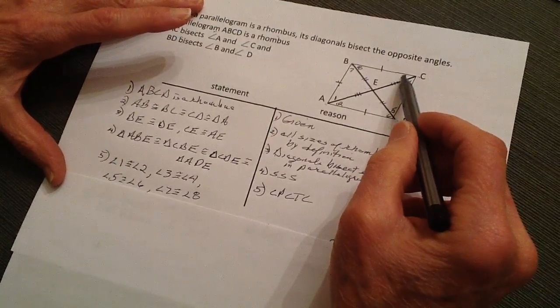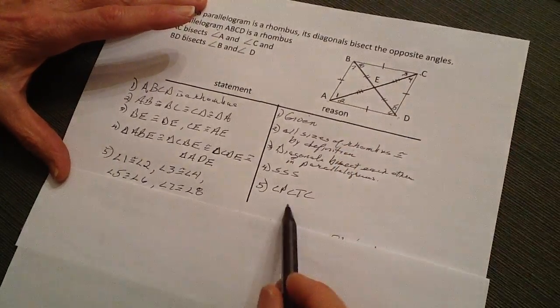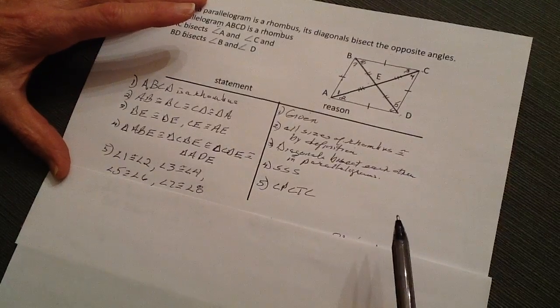5 and 6 are corresponding, 3 and 4 are corresponding, and 7 and 8 are corresponding to each other. That's by the corresponding parts of congruent triangles are congruent.